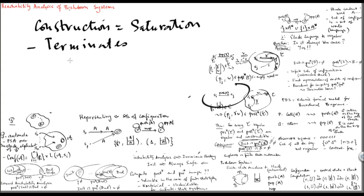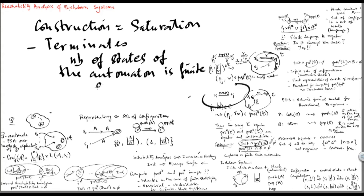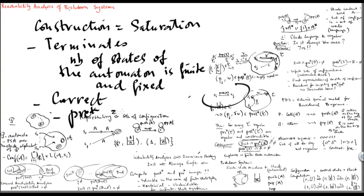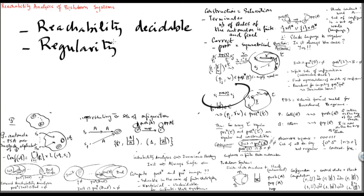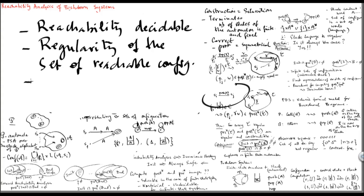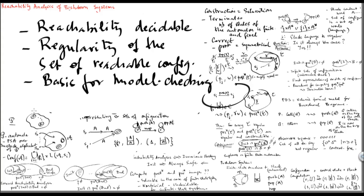To conclude, we have seen a class of infinite state systems for which the reachability problem is decidable, based on the regularity of the set of reachable configurations. The construction we have seen can be used for solving other verification problems, like model checking for temporal logics. For more details and further developments on this topic, please look at the links given below.